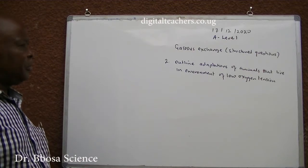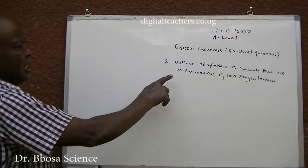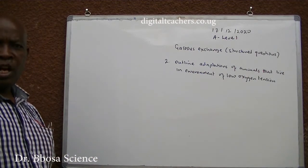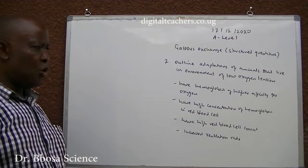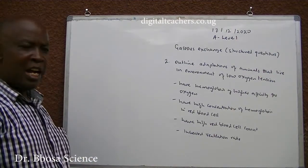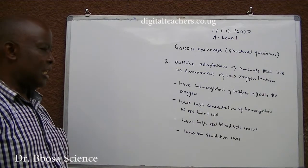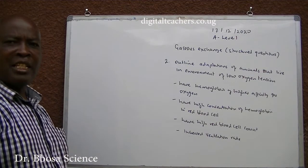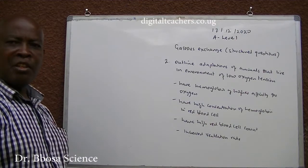Number 2: Outline adaptations of animals that live in an environment of low oxygen tension. You can pause and answer. 1. They have hemoglobin of high affinity for oxygen. 2. Have high concentration of hemoglobin in red blood cells. 3. Have high red blood cell count. 4. Have increased ventilation.